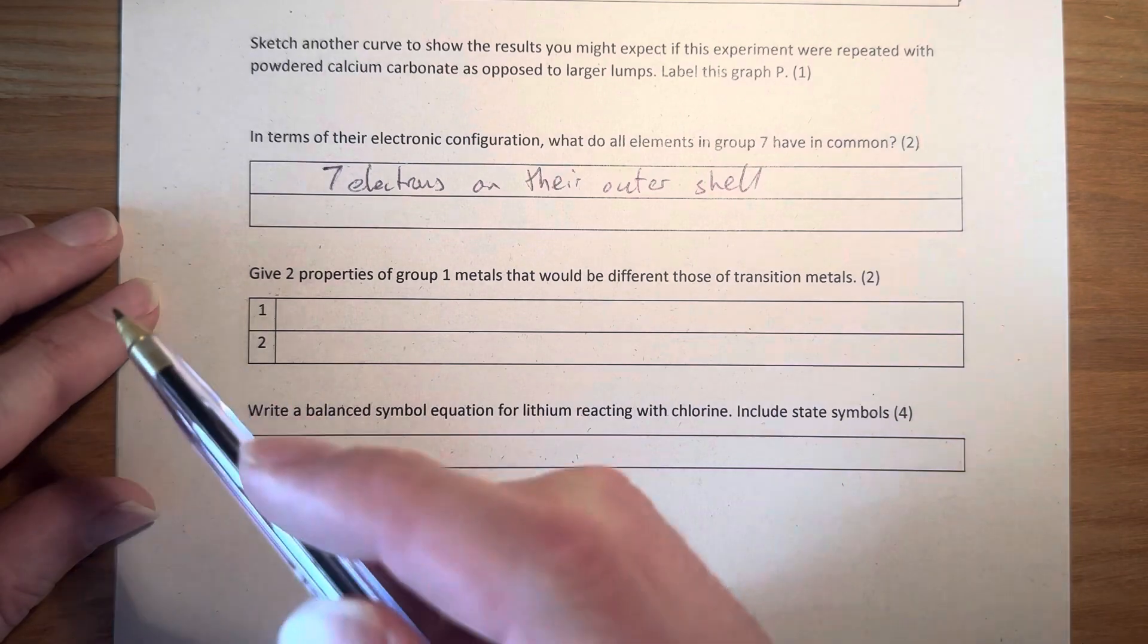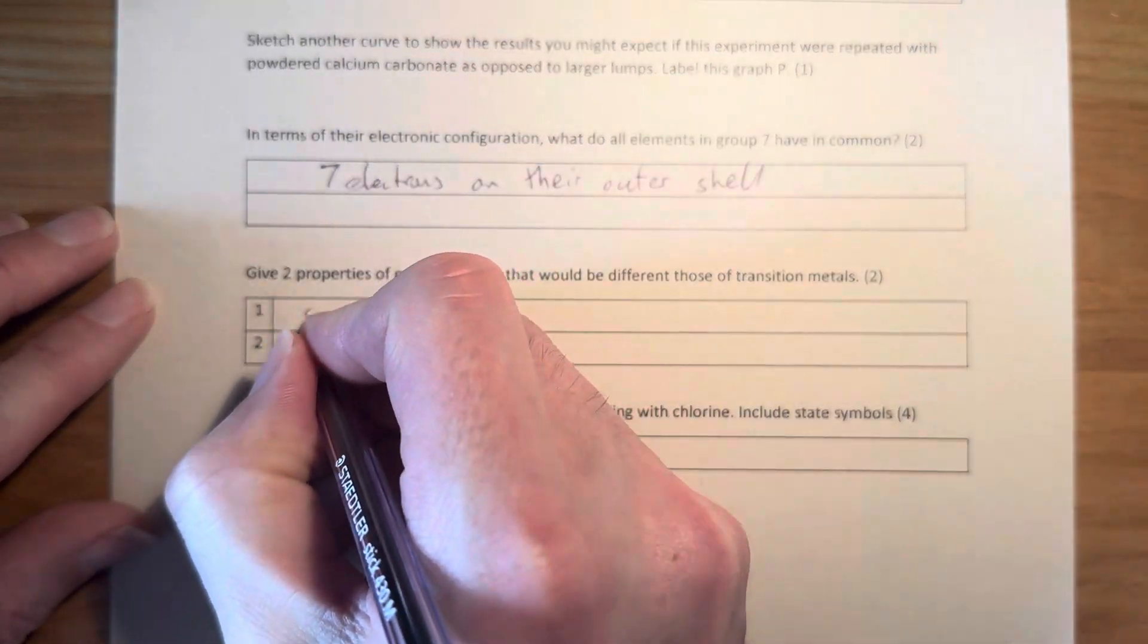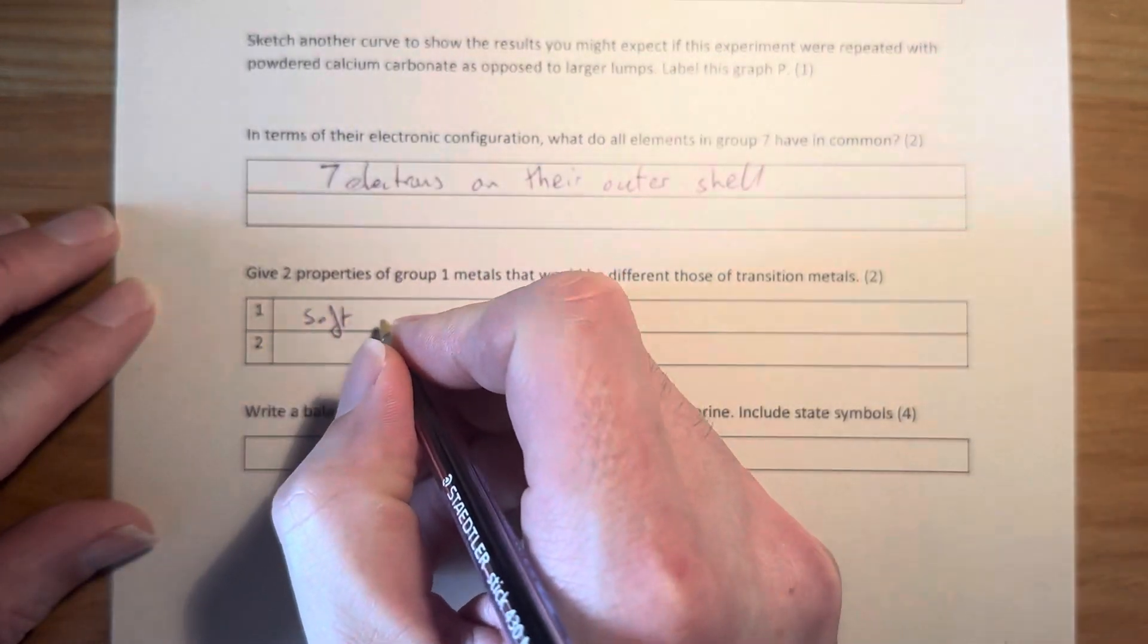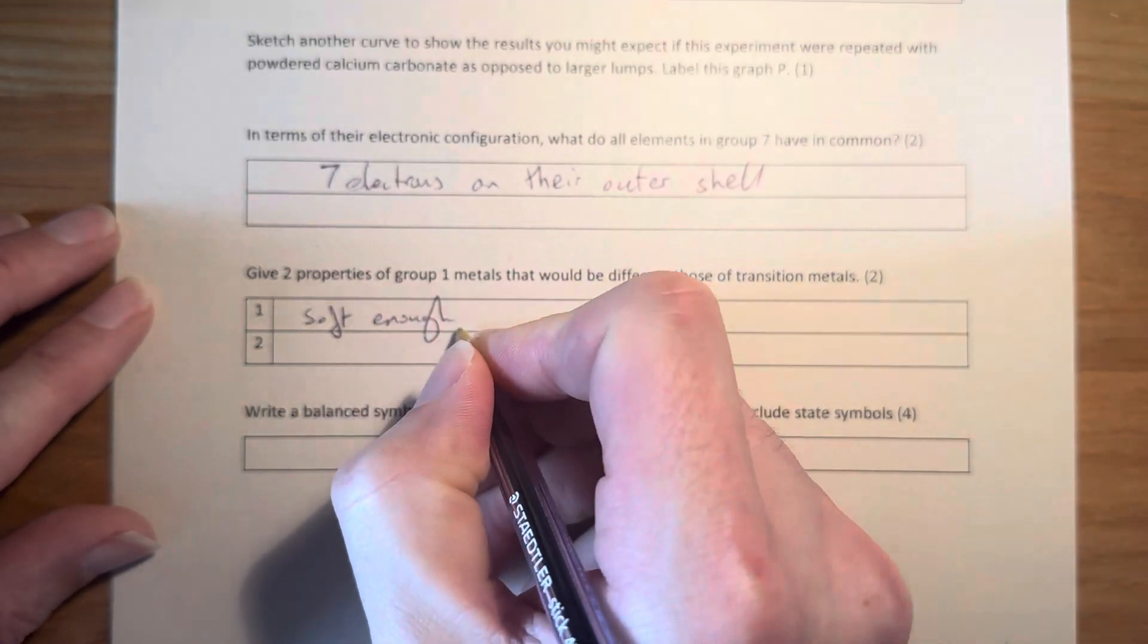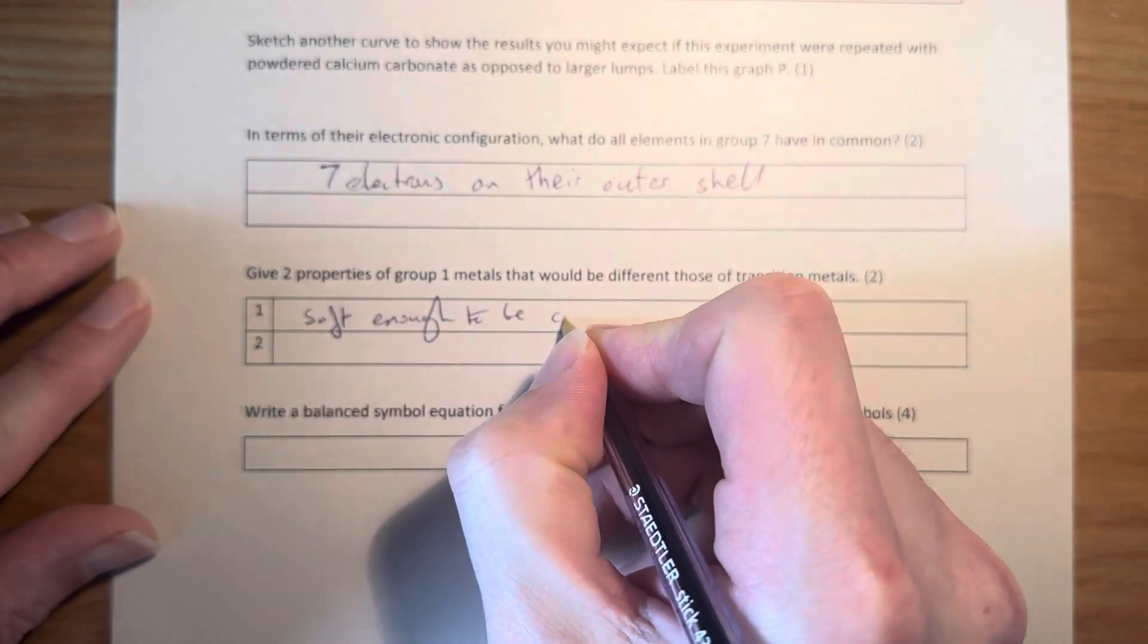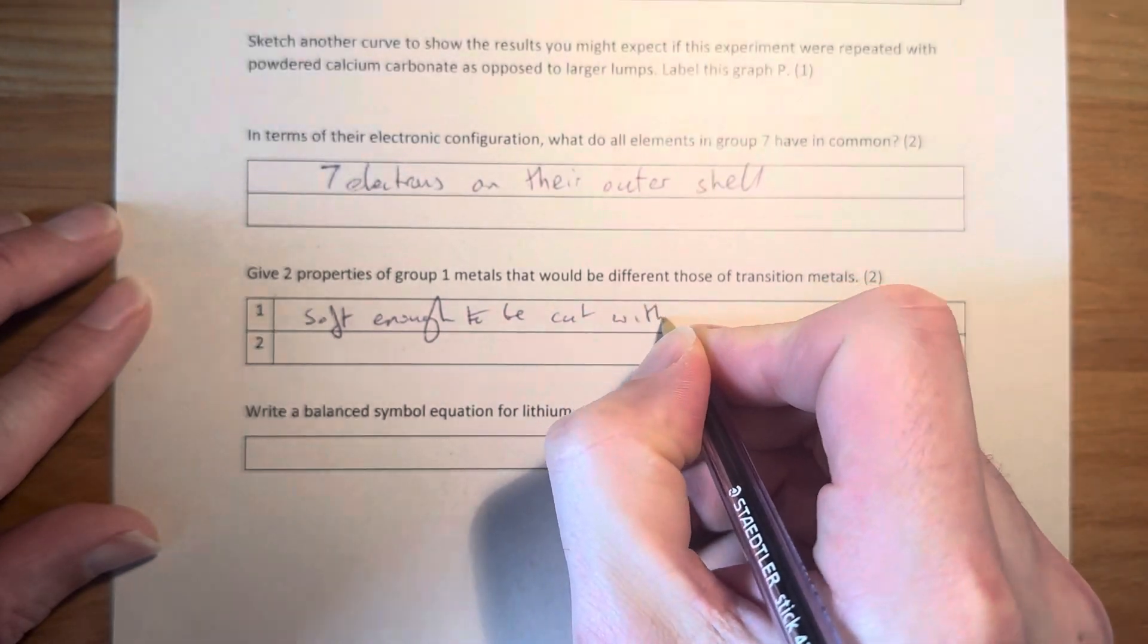Okay, so Group 1 metals are soft. Transition metals are hard and strong. Group 1 metals are soft enough to be cut with a knife.